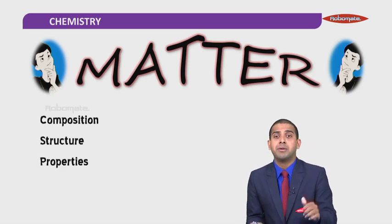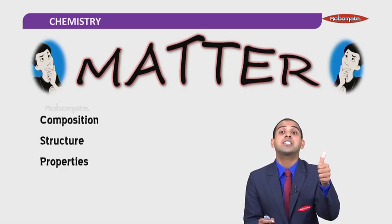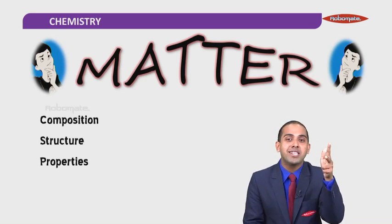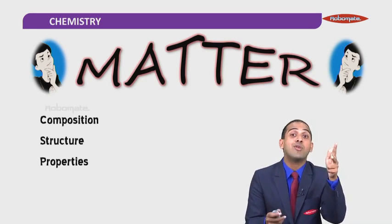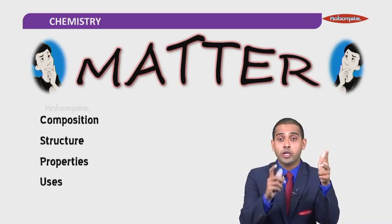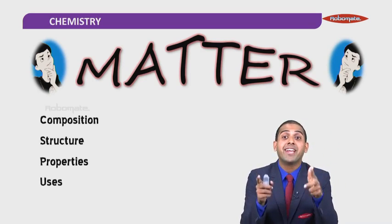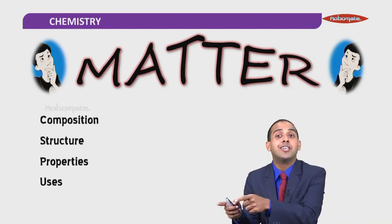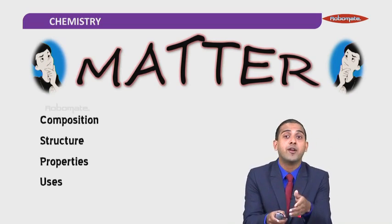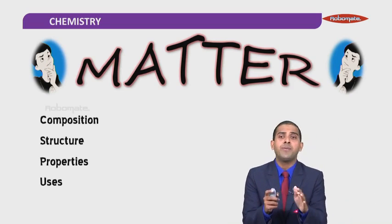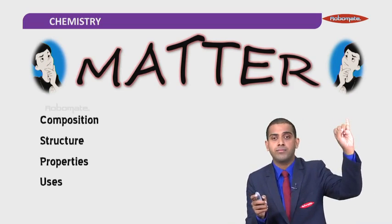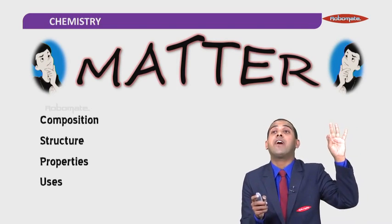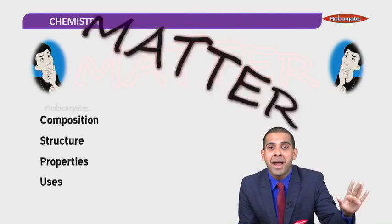So chemistry is the study of composition, structure, properties, and after studying all three, the last thing I would like to study is the uses. Where can I use this matter? Can I use it in the pharmaceutical industry, the metallurgical industry, or in cosmetics? So chemistry is the study of composition, structure, properties, and the uses of matter.